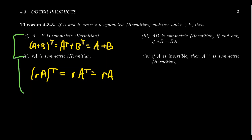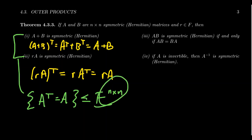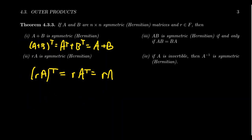Taking these two properties, we see that if we take the set of all n by n matrices such that A transpose equals A, we can naturally see that as a subset of F^{n×n}. It's a subspace of the space of n by n matrices, because it's closed under matrix addition and scalar multiplication. The only other thing to mention is that the square zero matrix is necessarily a symmetric matrix as well.